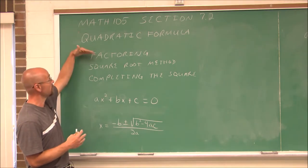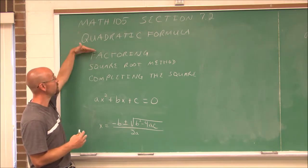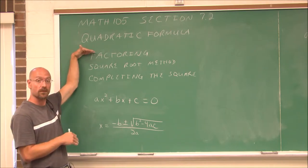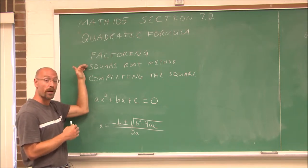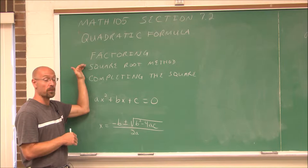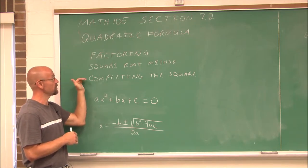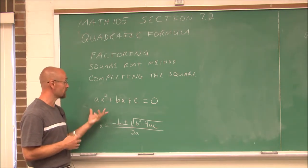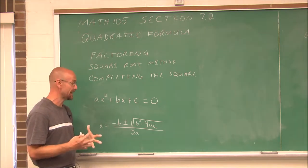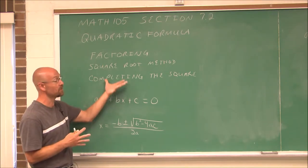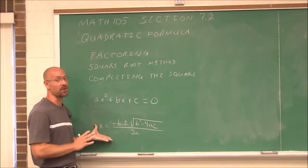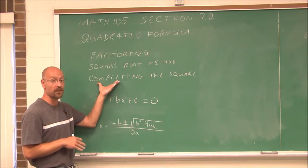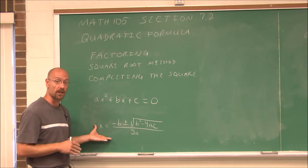I listed these methods in this order because factoring should be your go-to method to solve a quadratic. If it factors, use that method. If you can isolate a squared factor, use the square root property. If that fails, use completing the square. Only when your coefficients are tedious and the other methods aren't ideal would the quadratic formula be a last resort. Completing the square and the quadratic formula both work every time.